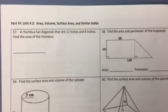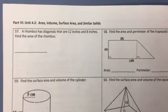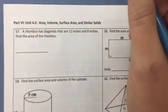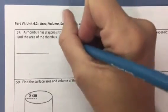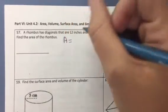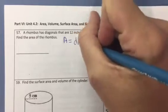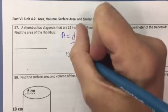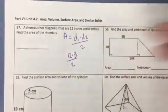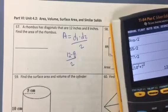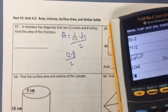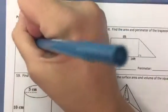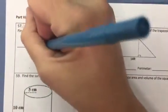So problem 57, a rhombus has diagonals that are 12 inches and 8 inches, find the area. We could sketch that and do some stuff with the Pythagorean theorem, but we just really need to note that for rhombuses and kites, we can multiply their diagonals and divide by 2. So 12 times 8 divided by 2, that's 48. The area is 48 inches squared.